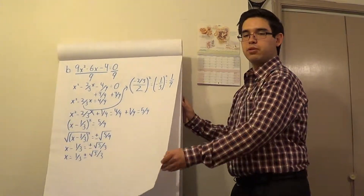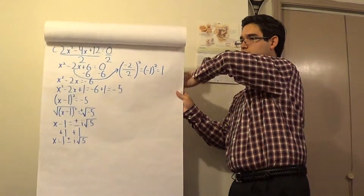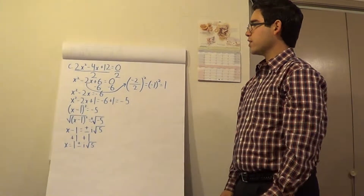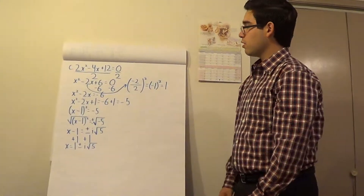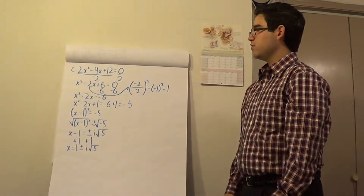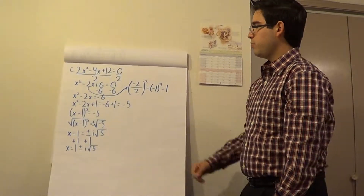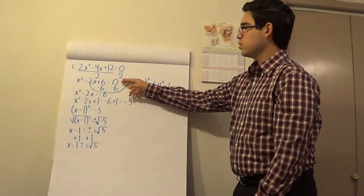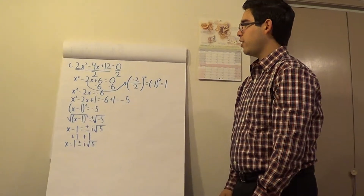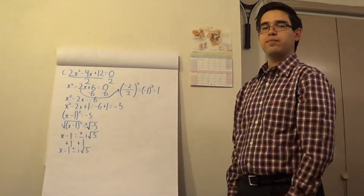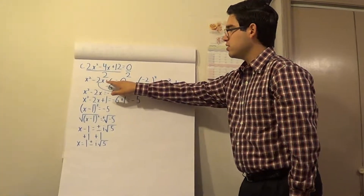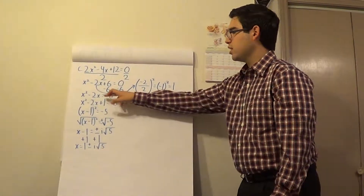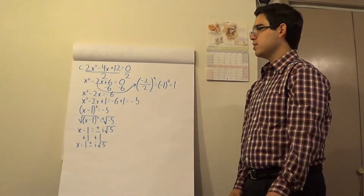Now let's look at our next example. Here we're going to have 2x squared minus 4x plus 12. Like before, we have a coefficient of x squared that is not equal to 1. So to make that a 1, we're going to divide both sides of the equation by 2. When doing so, we get the equivalent equation x squared minus 2x plus 6 is equal to 0. Like before, we subtract 6 from both sides, giving us x squared minus 2x is equal to negative 6.